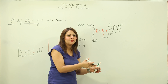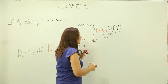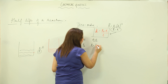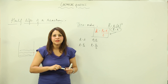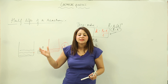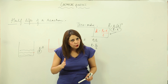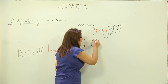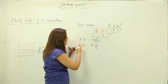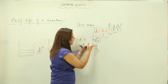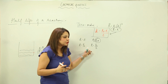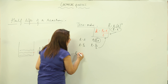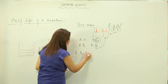Now we want to find the expression when time is reduced to the half period. That means when we reach the mid-point of the reaction, the concentration R becomes half of the initial concentration R₀. So at time T-half, the concentration of the reactant becomes R₀/2.